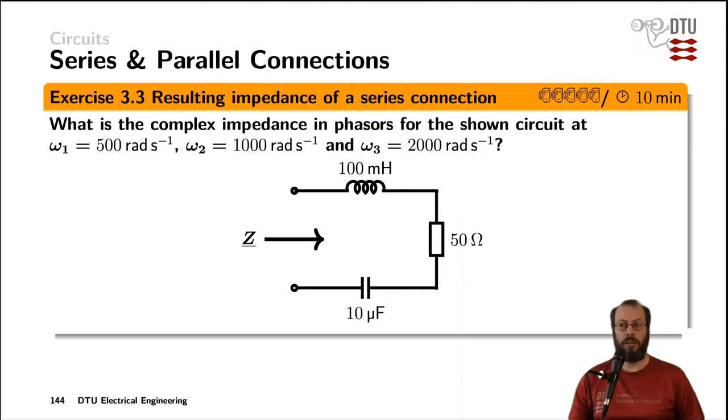In the third exercise, we are interested in the resulting impedance of a series connection of a 100 millihenry inductor, 50 ohm resistor, and 10 microfarad capacitor at three different angular frequencies: ω₁, ω₂, and ω₃.